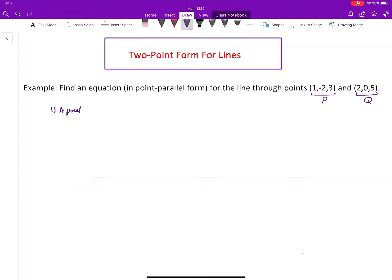And then do we have a parallel vector? The parallel vector is not given explicitly, but we have to use the given information. Two points on the line are given and we have to use those to find a parallel vector.